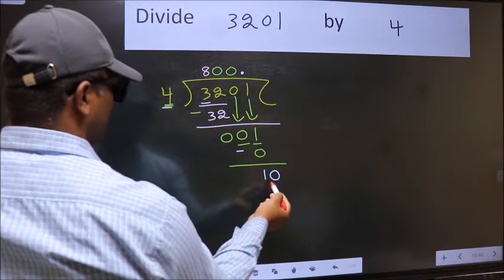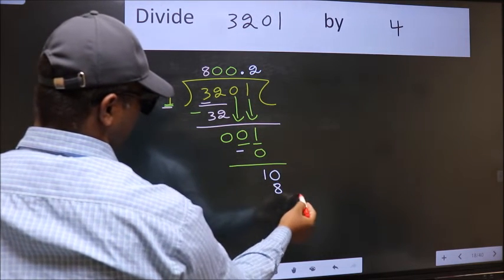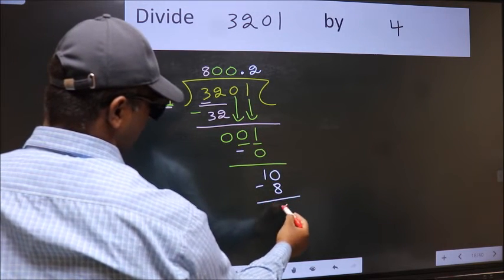So, 10. A number close to 10 in 4 table is 4 twos, 8. Now, we should subtract. We get 2.